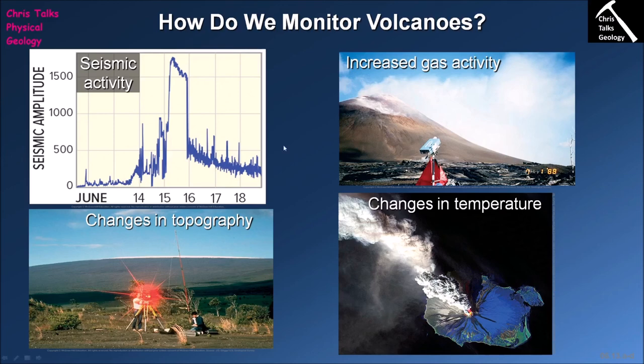These four factors — seismic activity, gas levels, topographic changes, and temperature — are the things geologists look for when assessing volcanoes. They're not the only factors, but they are by far the most common when trying to assess whether the chance of a volcano erupting is high or low. Thank you for watching everybody, and have a good day.